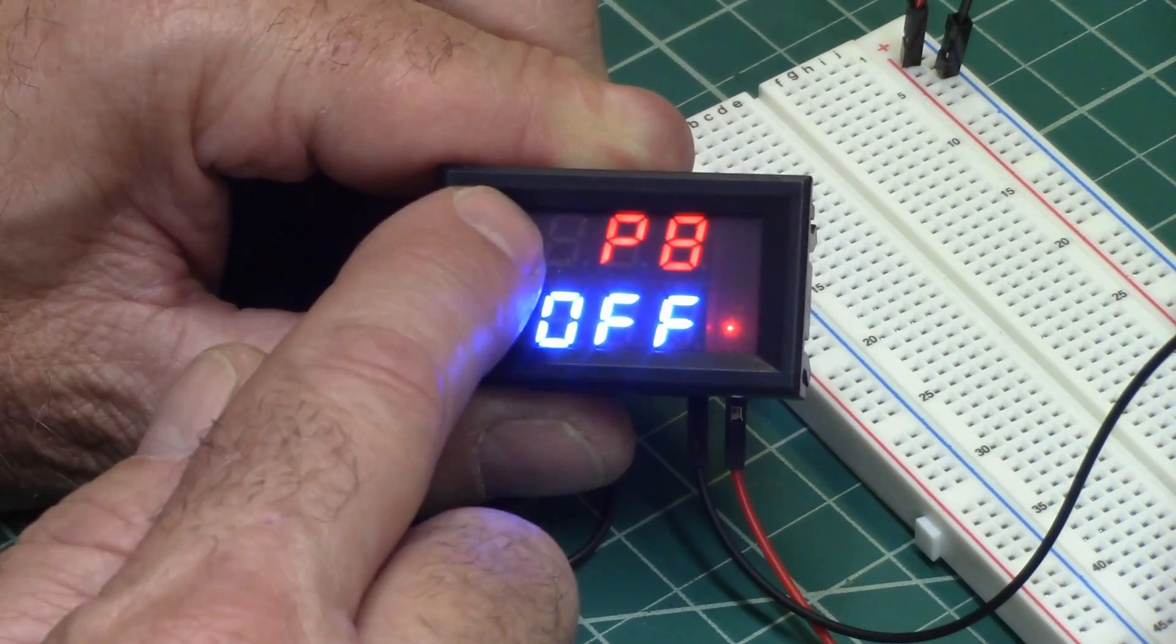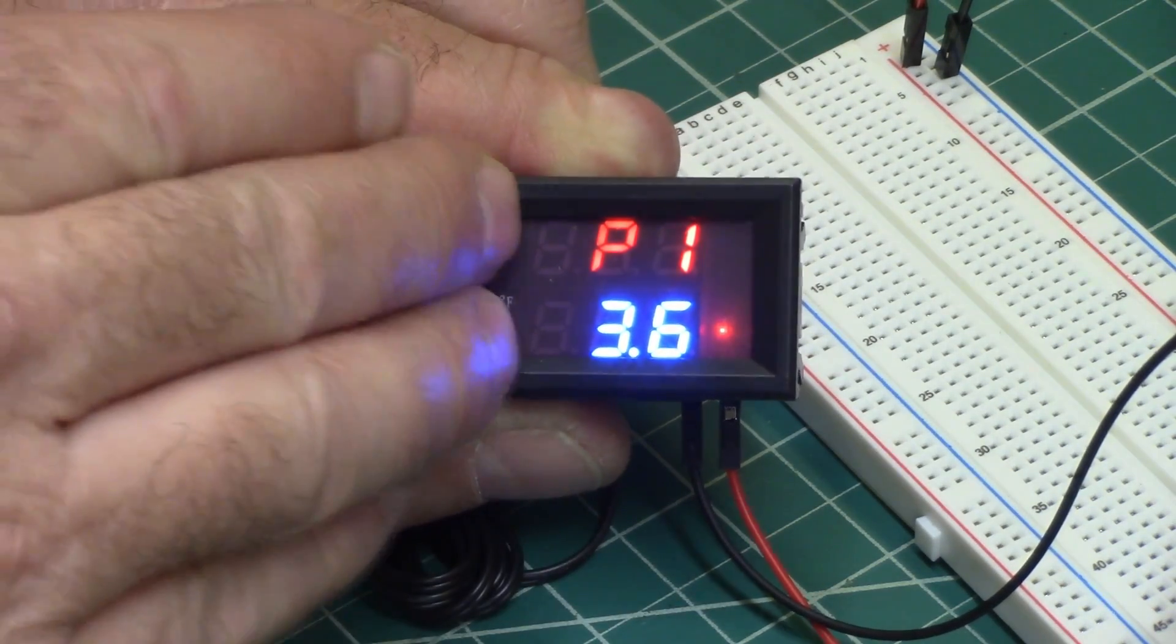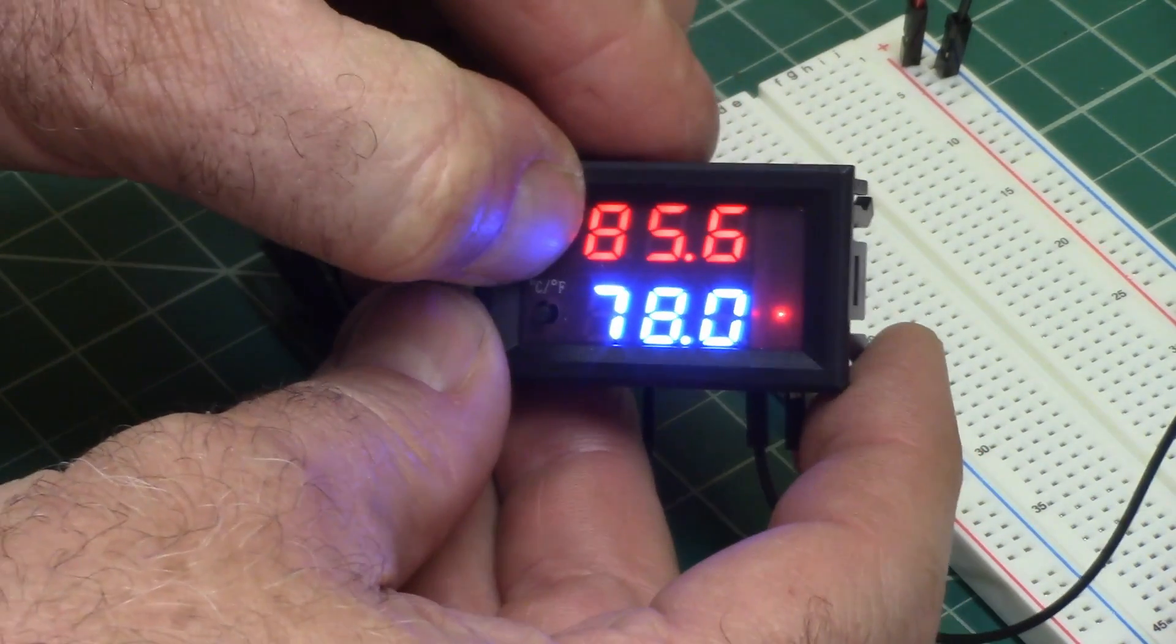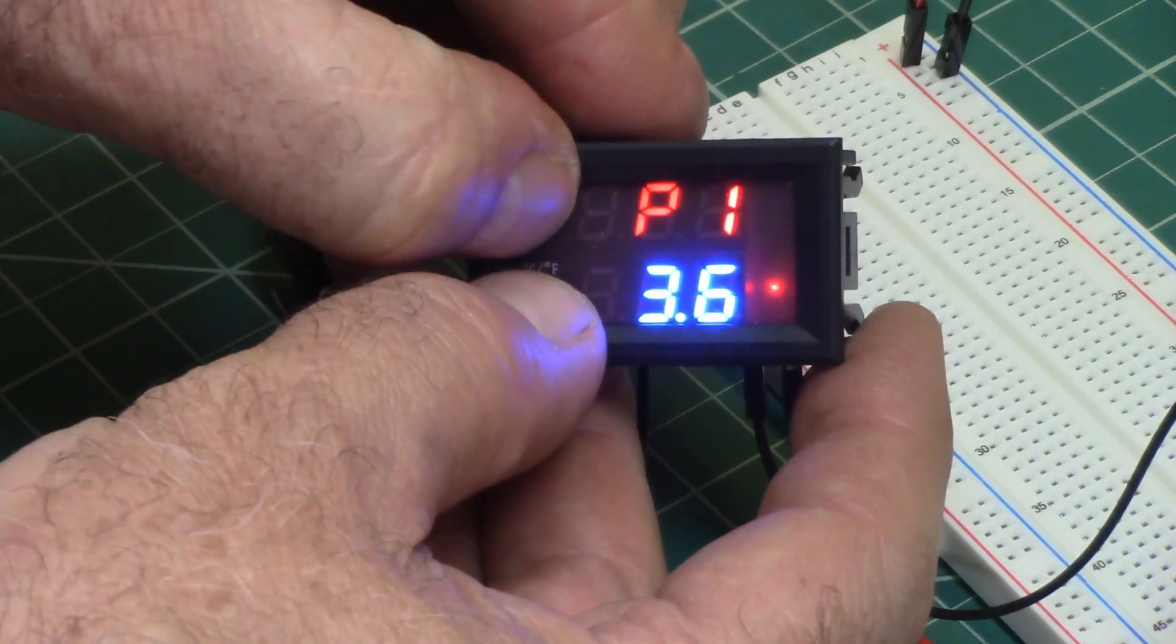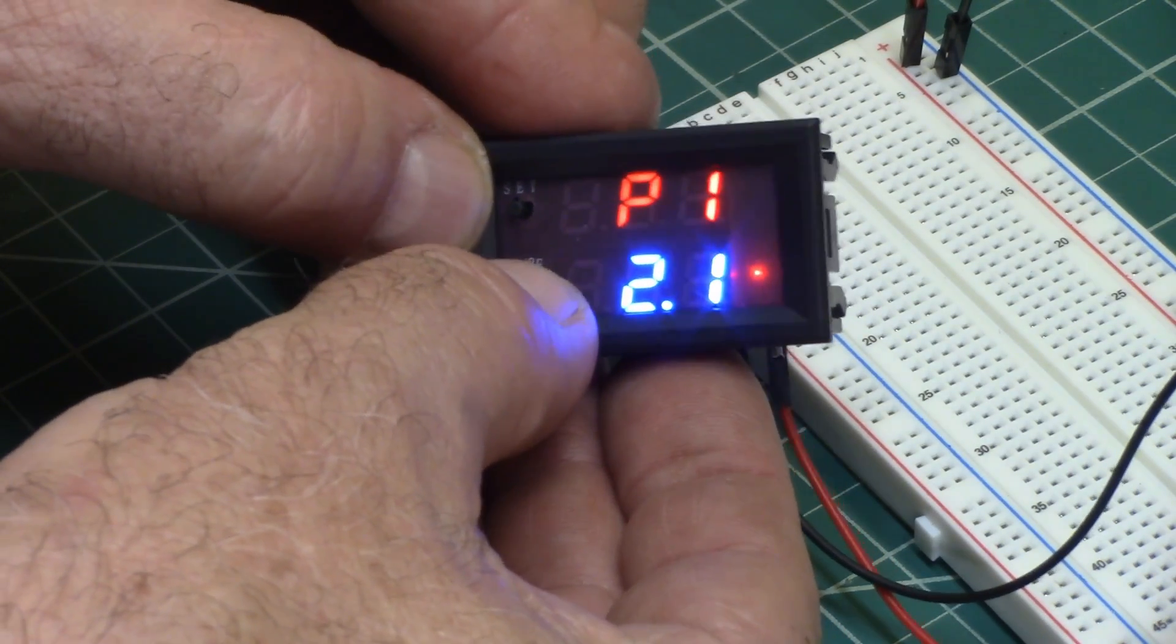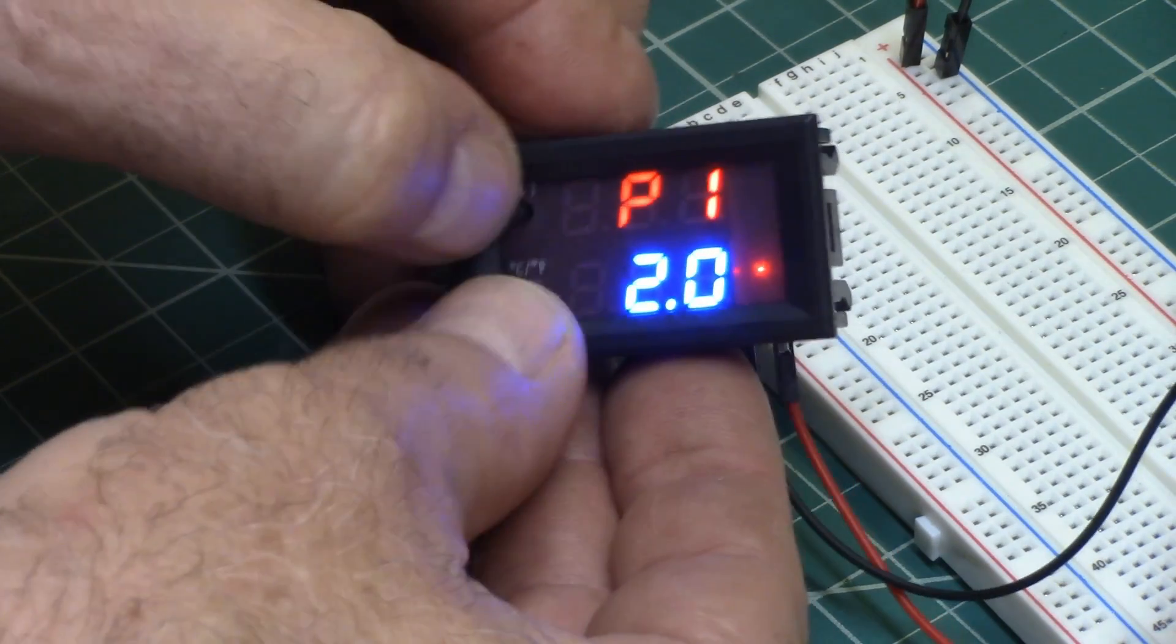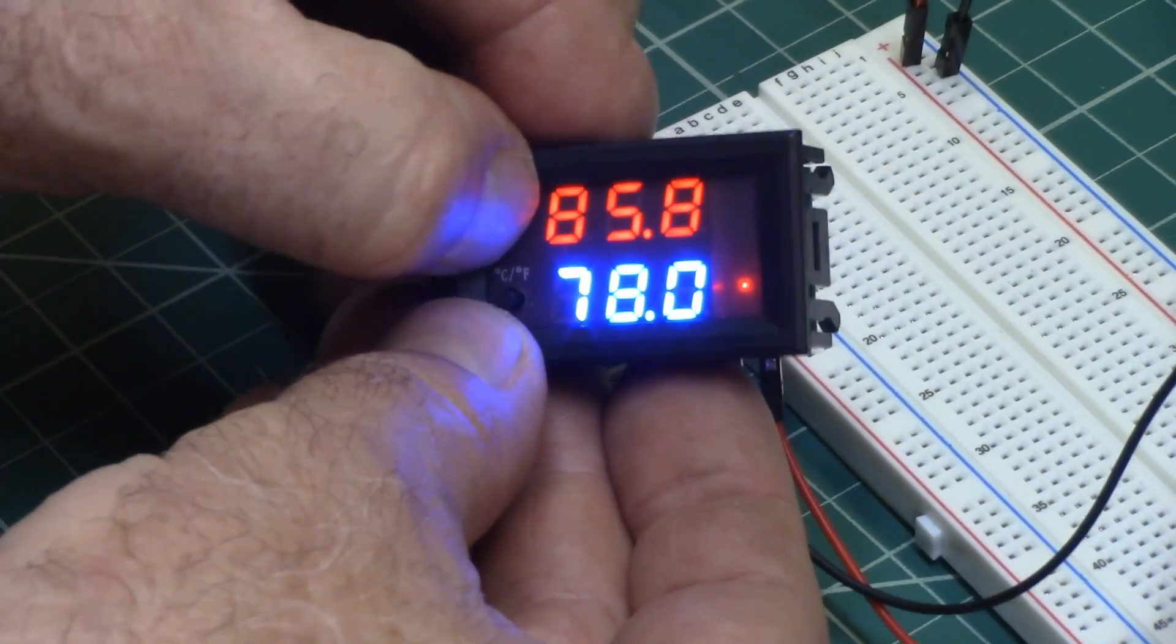So you would set that. I normally for cooling, I set that, and then you click both of them. Oh shoot, you got to move fast. Okay, so to change that, you hold both of them down, and say that's the one I want to do, and then we're going to run it down. I usually do two degrees. So something like that. And then you hit both of them again, and that locks it in. And then it goes back to its normal operation.